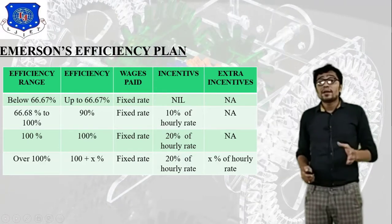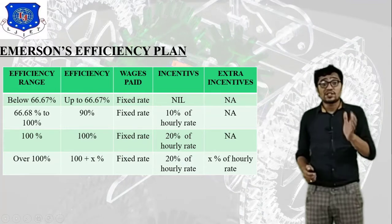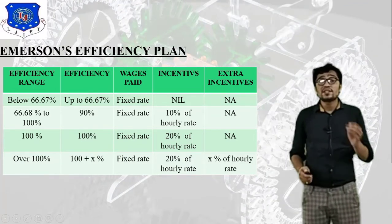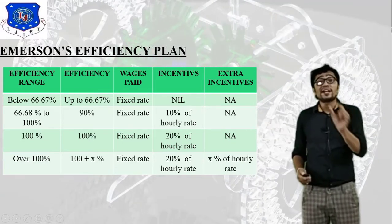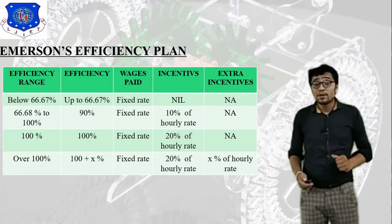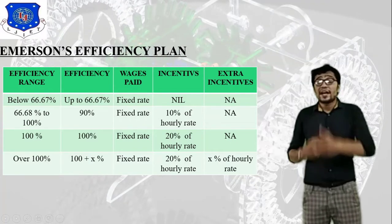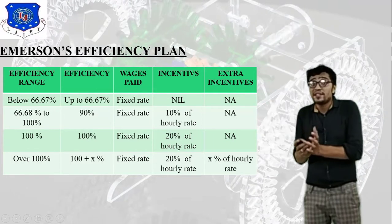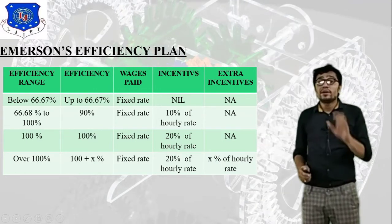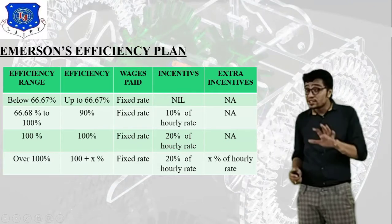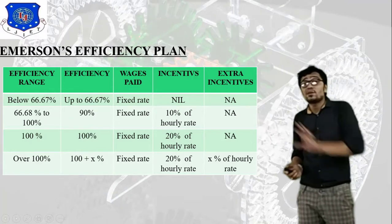Level two covers an efficiency range of 66.67% to 100%. For example, if the efficiency is 90%, the worker receives the fixed rate plus 10% of the hourly rate as an incentive. There is no extra incentive at this level. So the total wage at level two is fixed rate plus 10% of hourly rate.